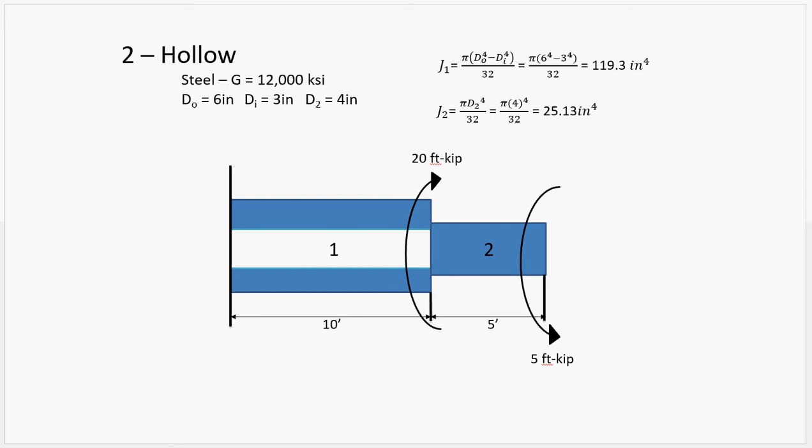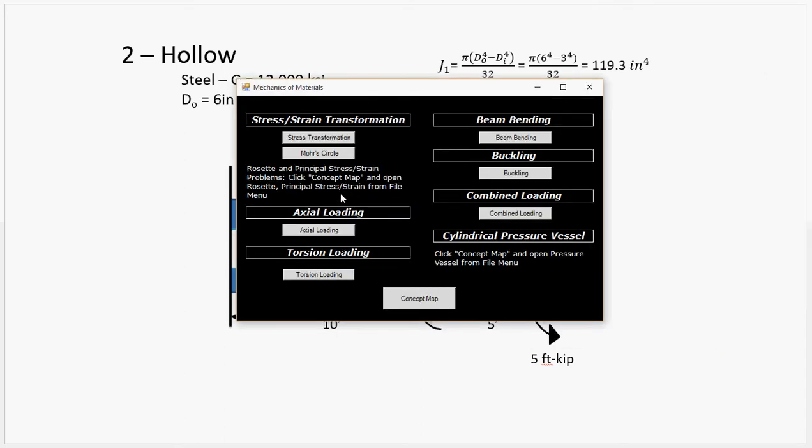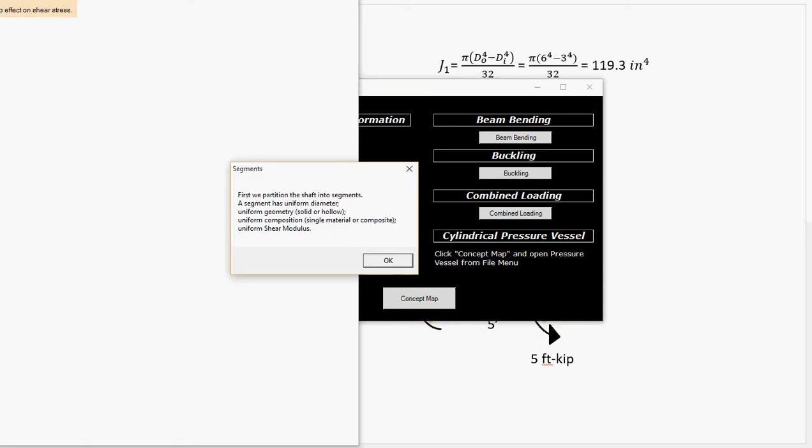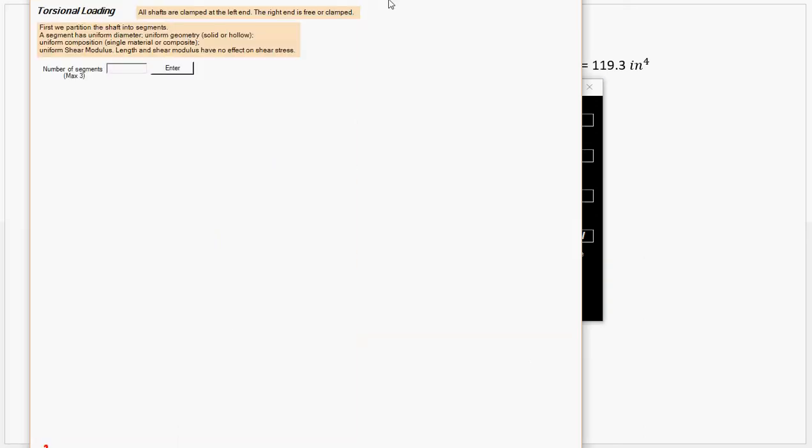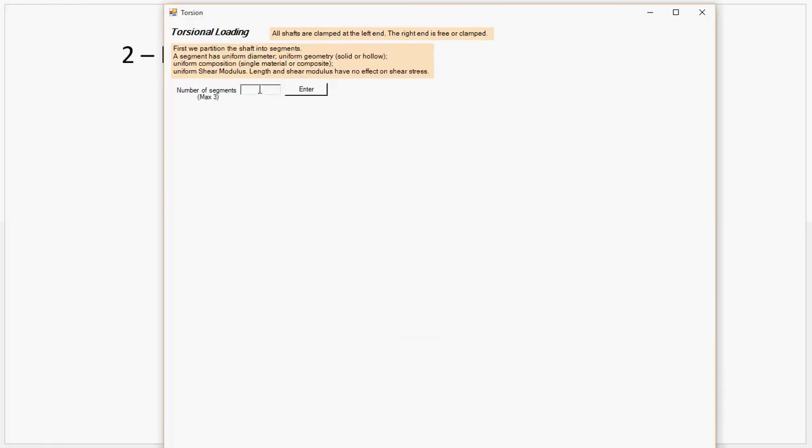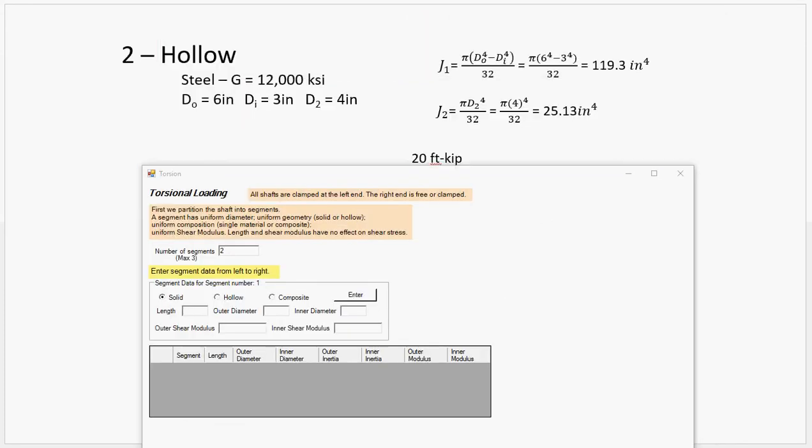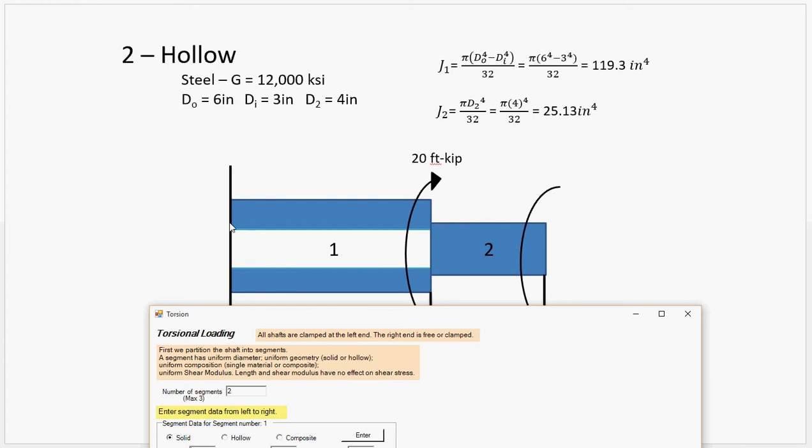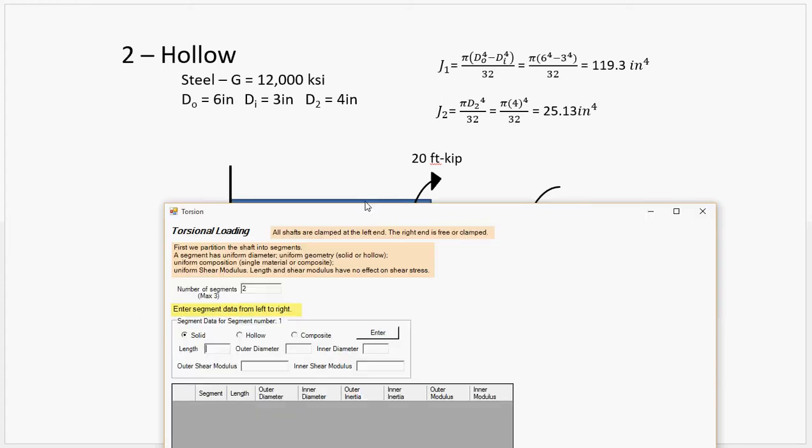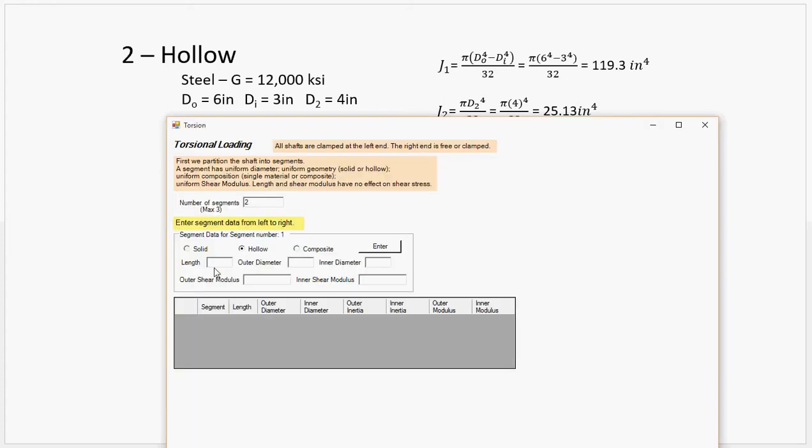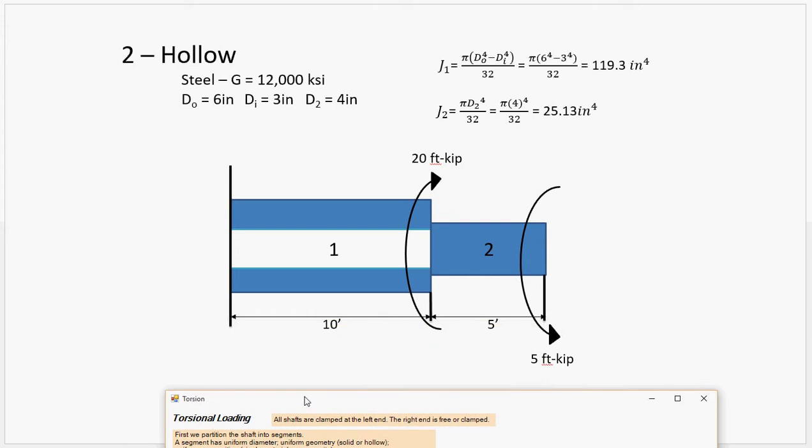Okay, so let's enter this problem. Okay, so number of segments, two. Okay, so for segment one, when looking from the left, that's the hollow segment, and it's ten feet.